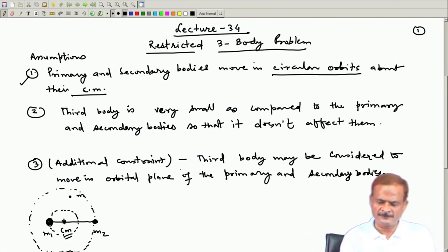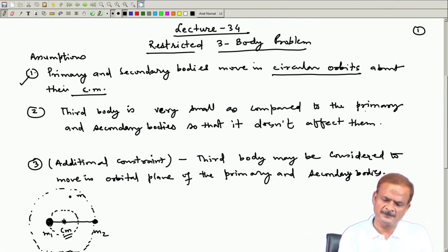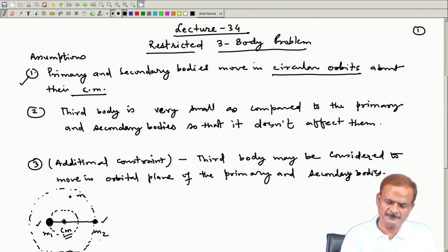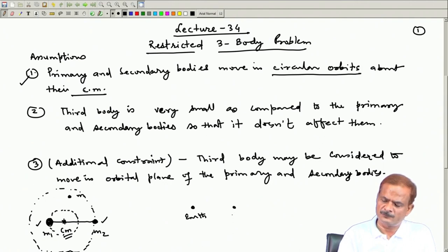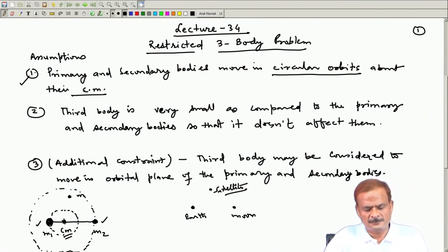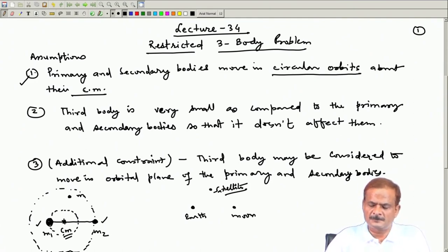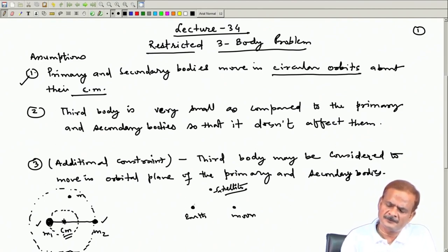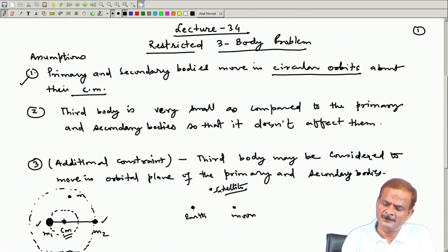The second assumption is that the third body is very small compared to the primary and the secondary bodies. For example, consider the Earth and Moon as the primary and secondary, and a satellite as the third body. The satellite may be only a few thousand kilograms, while the Earth and Moon are very massive. Although there is gravitational attraction between all of them, the satellite's gravitational attraction on the Earth is feeble and can be neglected altogether.